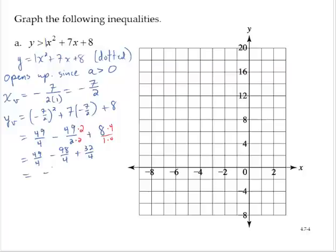So that's negative 49 over 4 plus 32 over 4, which is negative 17 over 4, which is equal to negative 4 and 1 fourth. So therefore, the vertex is negative 7 halves and negative 4 and 1 fourth, negative 17 fourths.